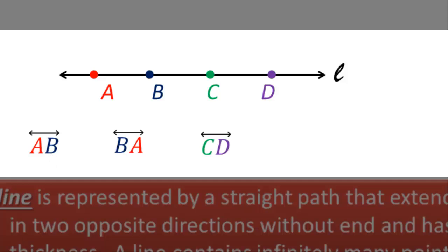I can name it by any of the letters. So I could also name it line CD or I could even take this point here and this point here and name it line AD, or I could have reversed this and just called it line DA. I can also name it by this cursive lowercase letter right here and just call it line L.